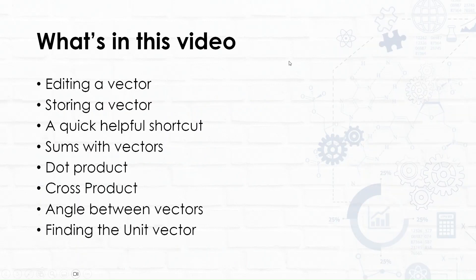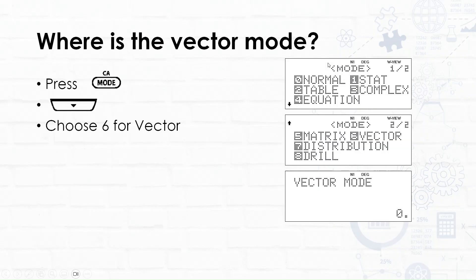So what's in this video? We're going to look at editing a vector, storing that vector, a helpful shortcut to recall vectors quickly, then do sums with vectors, dot product, cross product, the angle between vectors, and finding the unit vector. It's a jam-packed session that shouldn't take us too long. Let's go through it.